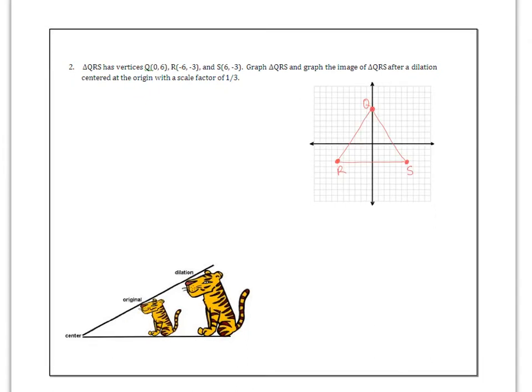So here's my original image. Q, R, and S. And I'm going to send them through a dilation centered at the origin with a scale factor of 1/3. This means multiply by 1/3. I could also divide by 3 and I will get the same answer. So Q prime, 0 divided by anything is still 0. 6 divided by 3 is 2 or 6 times 1/3.